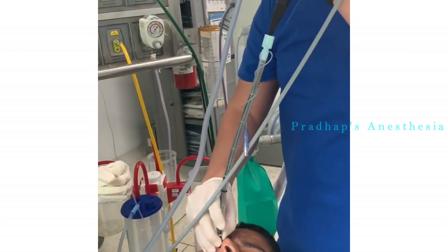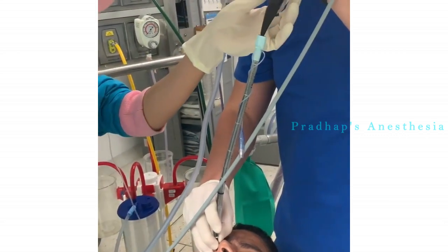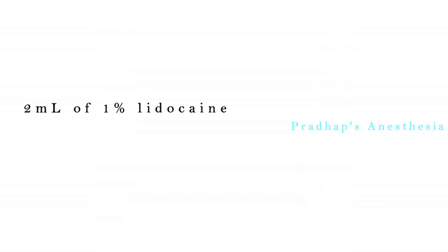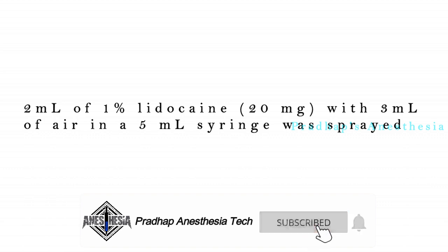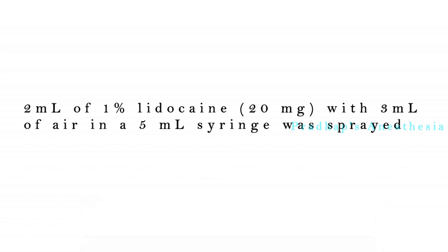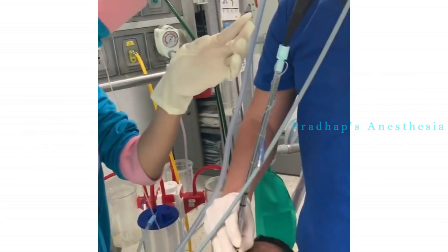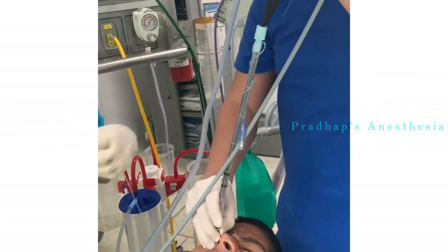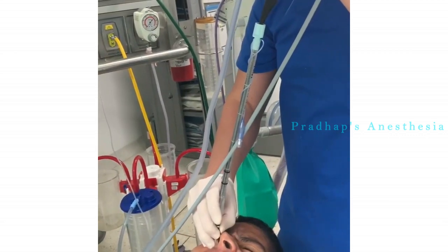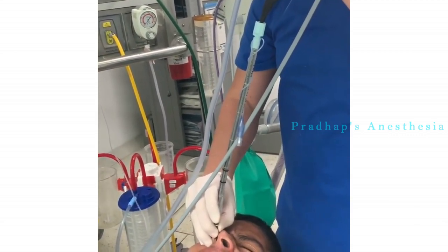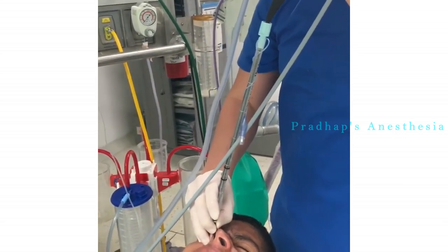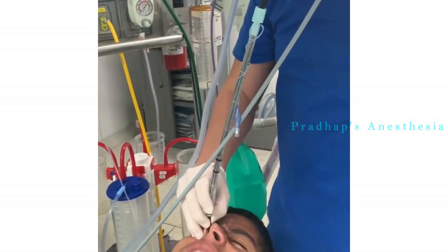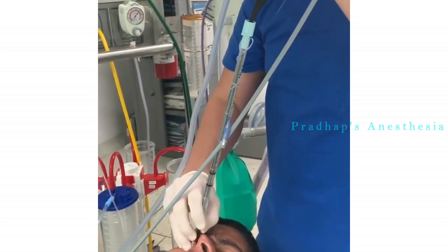A fiber optic scope was advanced through the nasotracheal tube, and 2 milliliters of 1% lidocaine (20 milligrams) with 3 milliliters of air in a 5-milliliter syringe was first sprayed onto the epiglottis via the working channel of the fibroscope. The fibroscope was then advanced toward the glottis and passed behind the epiglottis to visualize the vocal cords. A second dose of 2 milliliters of 1% lidocaine (20 milligrams) was sprayed toward the vocal cords.